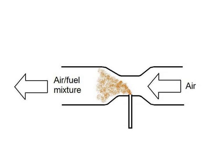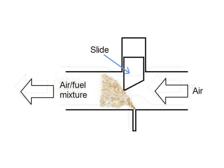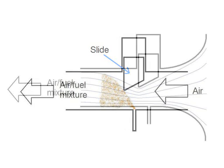Now, since the air at the venturi is at a lower pressure than the atmospheric one, it will aspirate fuel from the pulverizer located at that spot, mixing it with the air. Usually, this venturi effect is created by a guillotine valve called the slide.